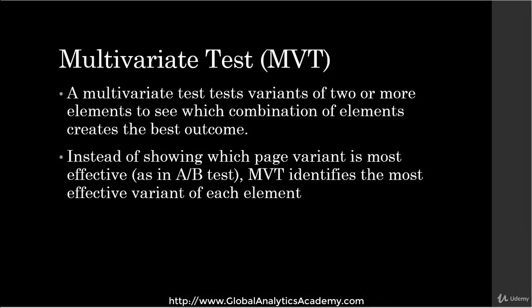A multivariate test tests variants of two or more elements simultaneously to see which combination creates the best outcome. Instead of showing which page variant is more effective, MVT or multivariate test identifies the most effective variants of each element as well as analyzing the interaction between those elements. Multivariate tests are used for optimizing multiple aspects of a page.